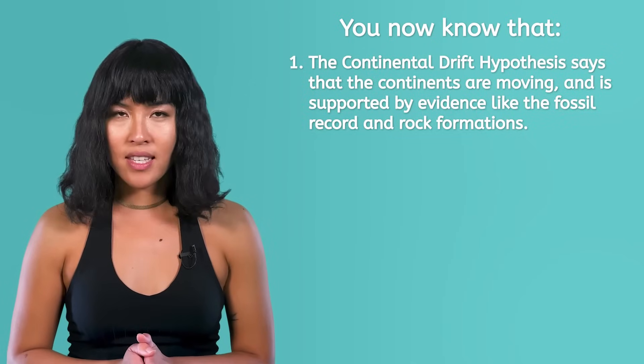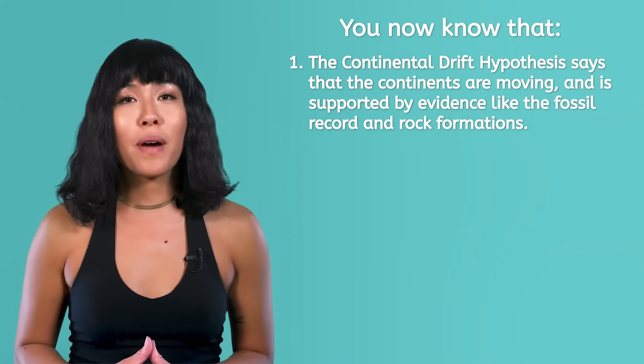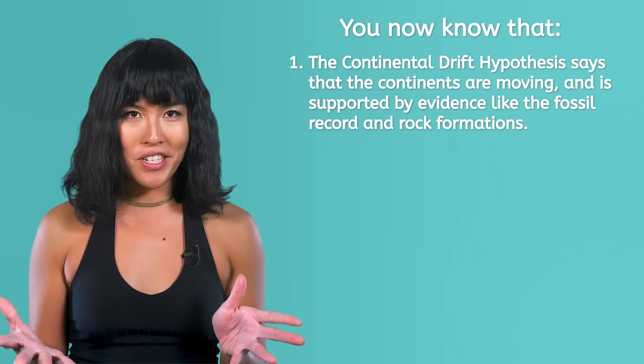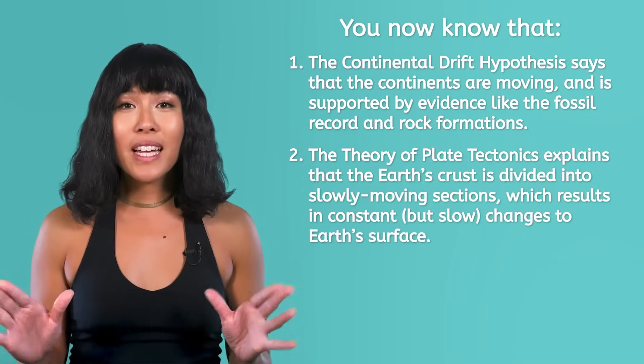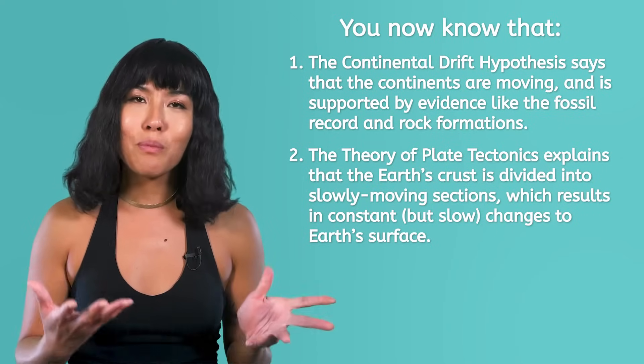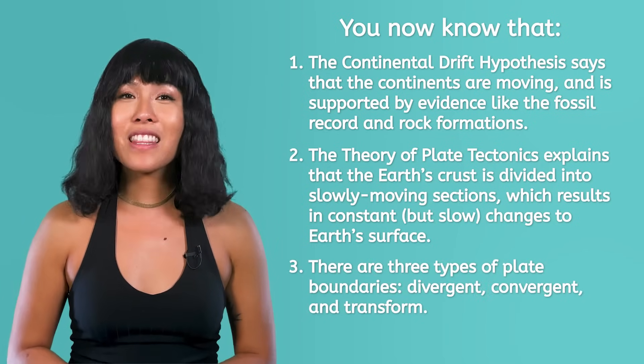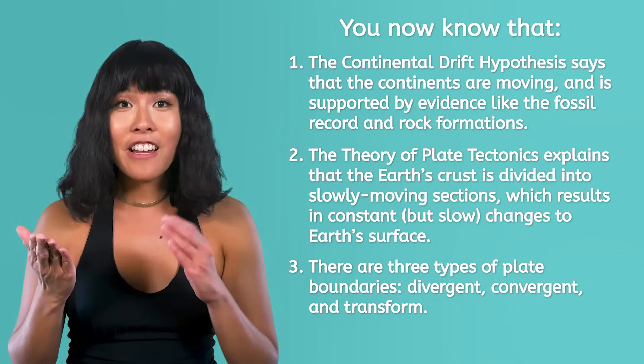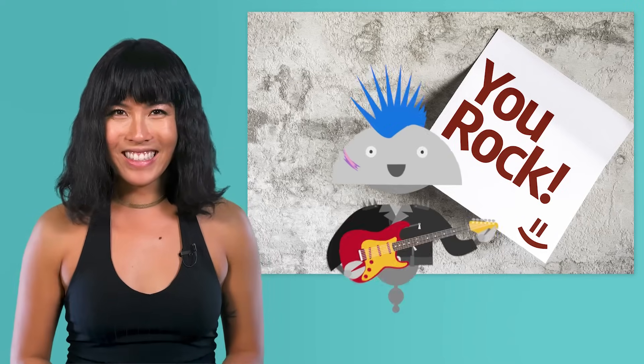So let's recap what we learned today. You now know that the continental drift hypothesis says that the continents are moving and is supported by evidence like the fossil record and rock formations. The theory of plate tectonics explains that the Earth's crust is divided into slowly moving sections, which results in constant but slow changes to Earth's surface. And there are three types of plate boundaries: divergent, convergent, and transform. Now that we've solved this puzzle, be sure to check out the games and extension activities to help you get ready for our next lesson, when we'll learn even more about how plate tectonics shape the Earth. In the meantime, remember, in Earth science, as in life, you rock! See you next time!